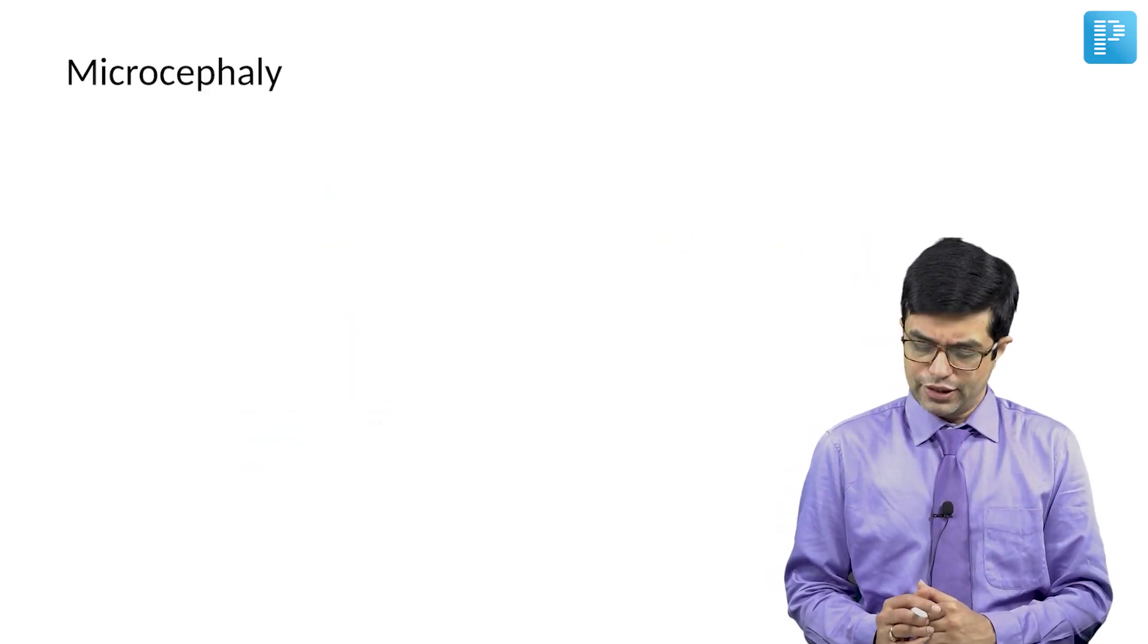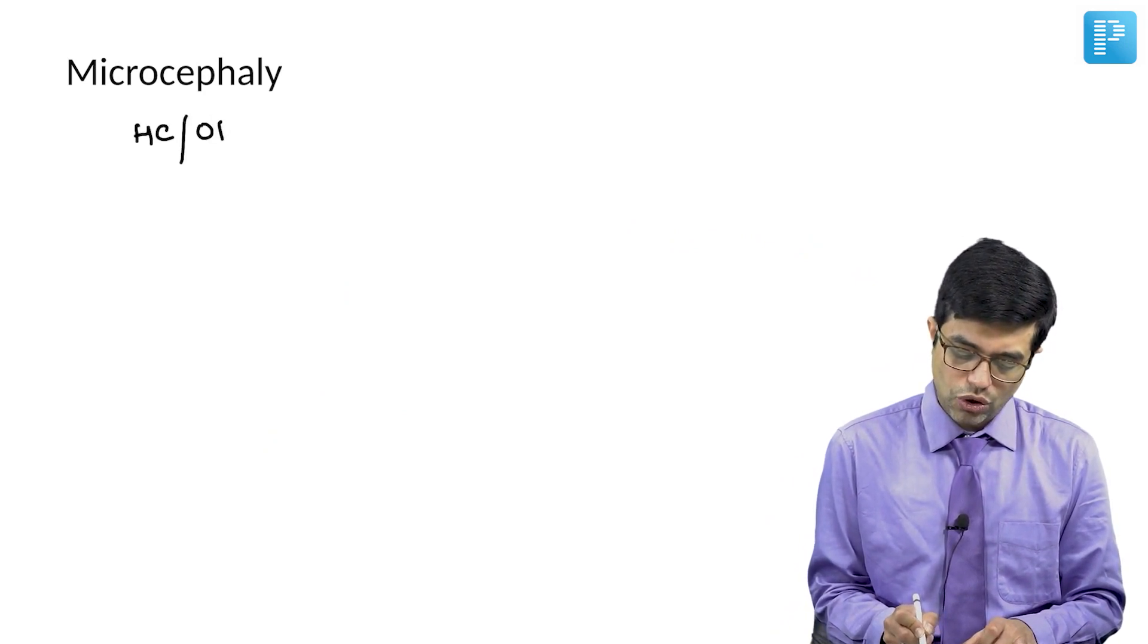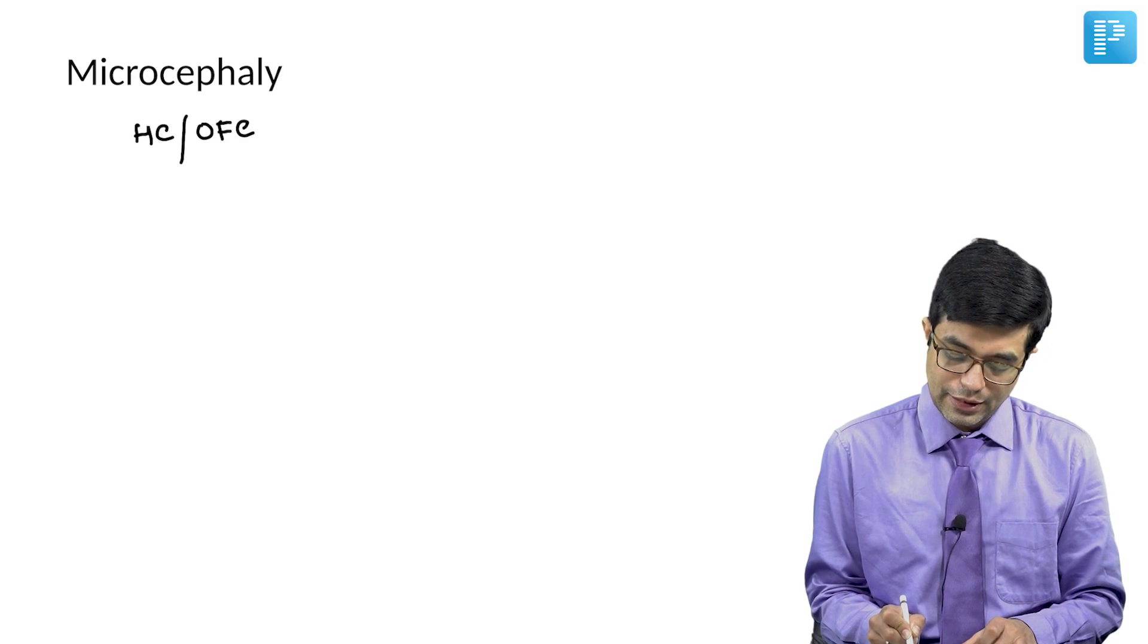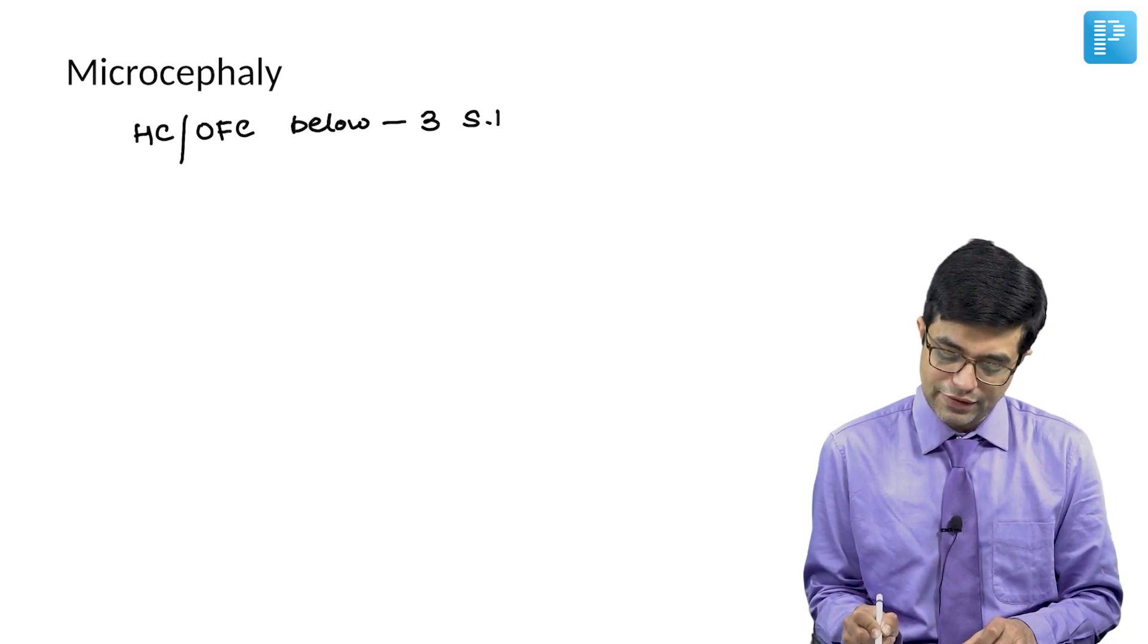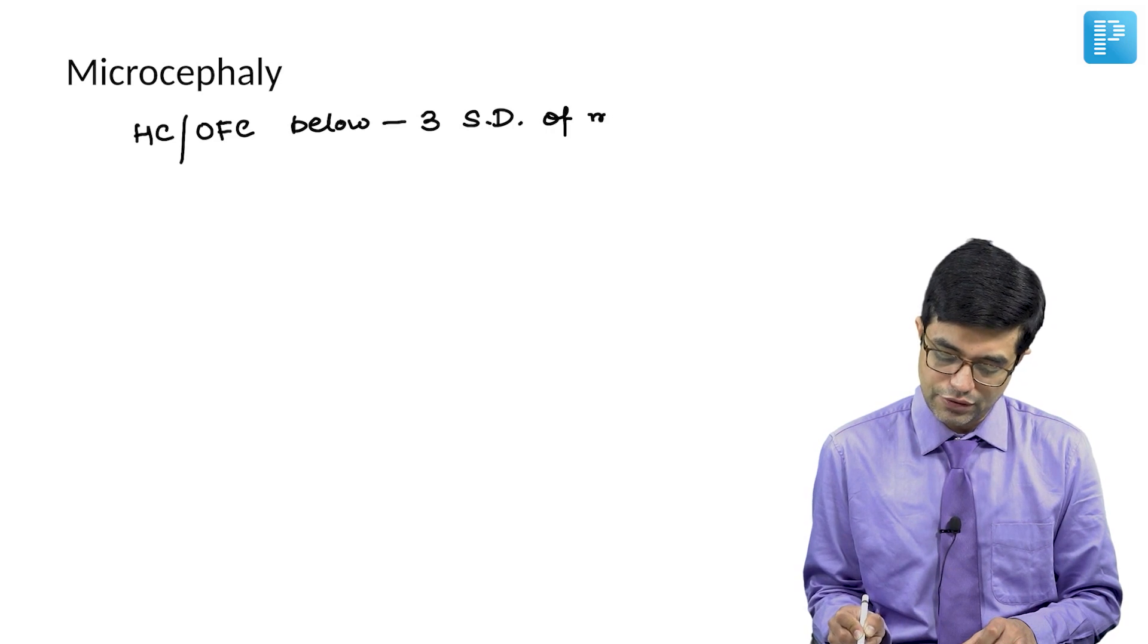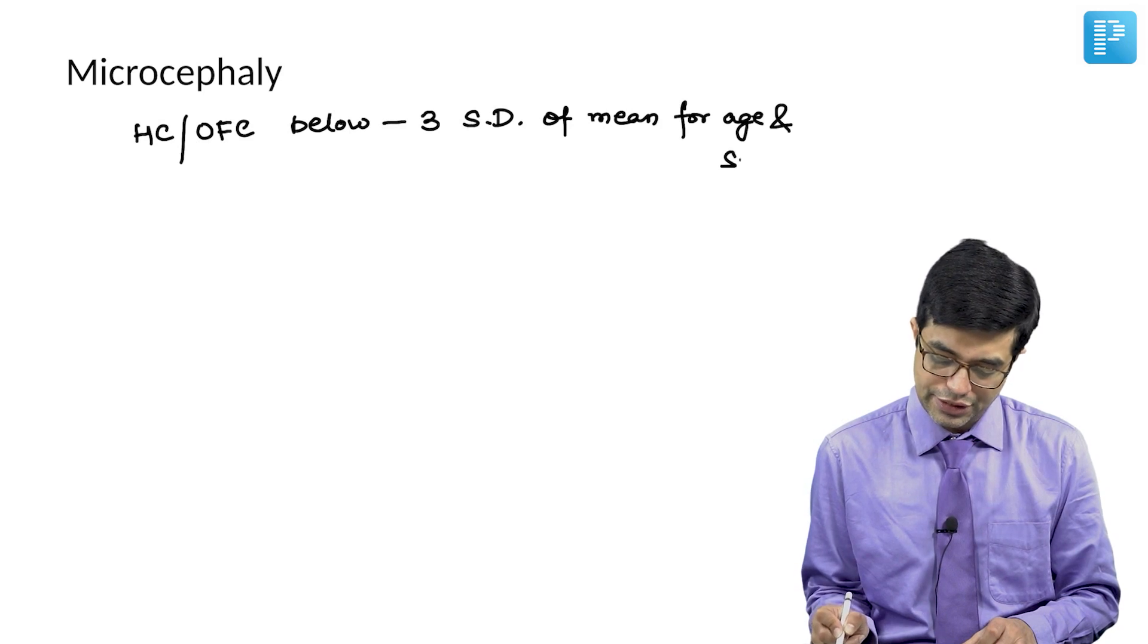Next, we come to microcephaly. What is microcephaly? Microcephaly is defined as head circumference or occipitofrontal circumference below minus 3 standard deviations of the mean for age as well as sex, that is gender.